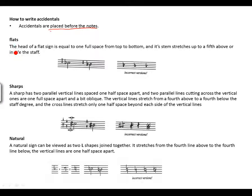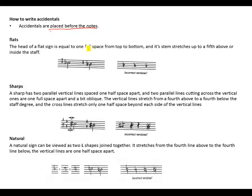For flats: the head of a flat sign is equal to one full space — from top to bottom, it occupies one full space. The stem stretches up to a fifth above or below, even inside the staff. Here is the measurement for the flat sign: one full space from top to bottom, and the stem stretches up to a fifth — you can count one, two, three, four, five.